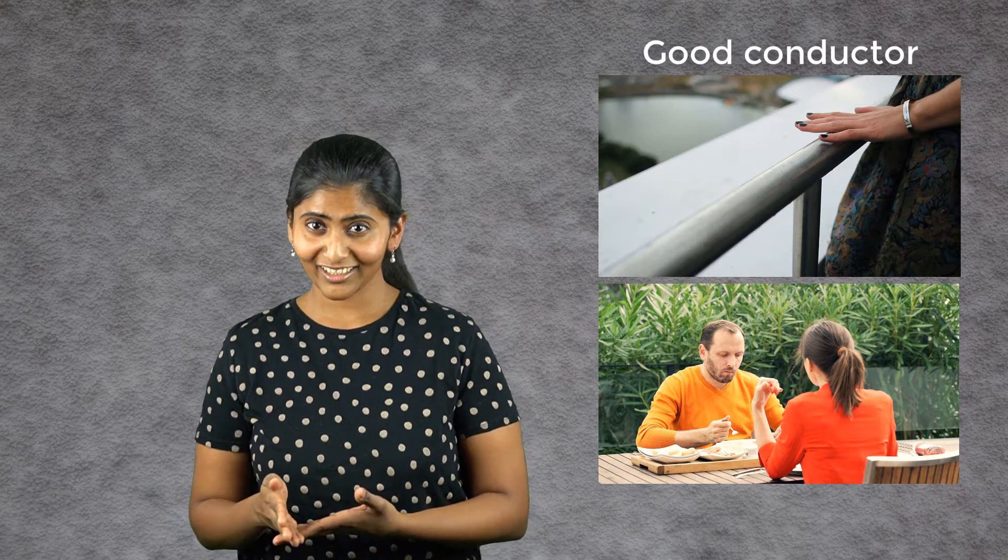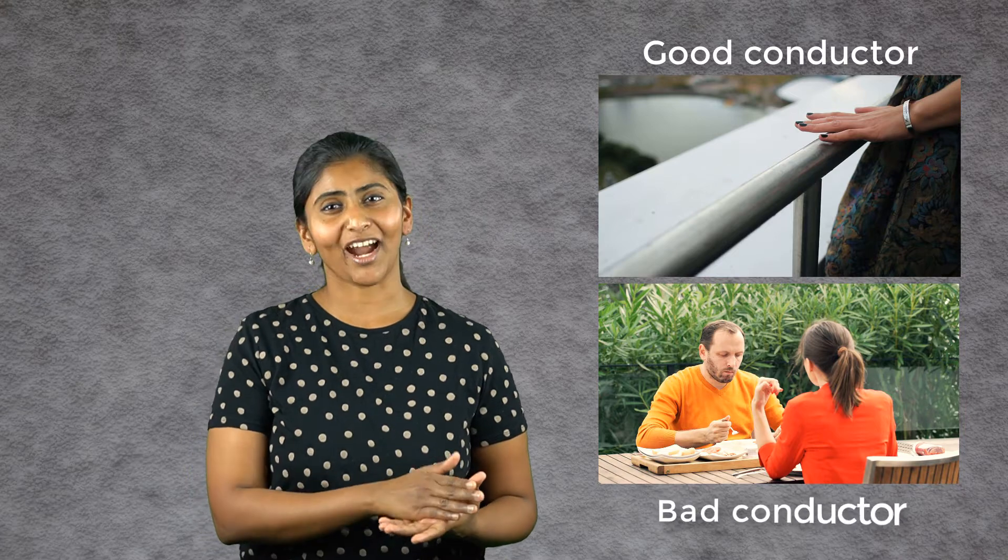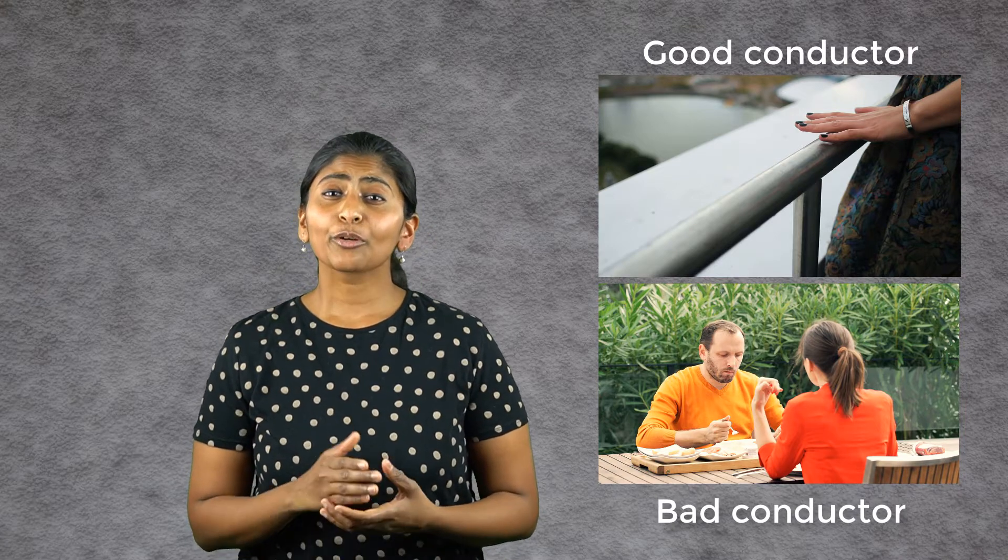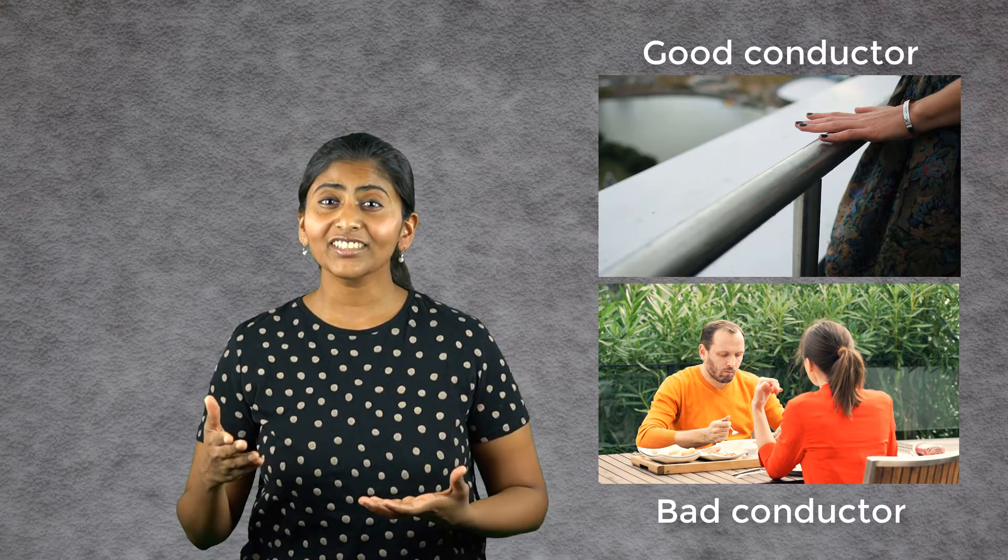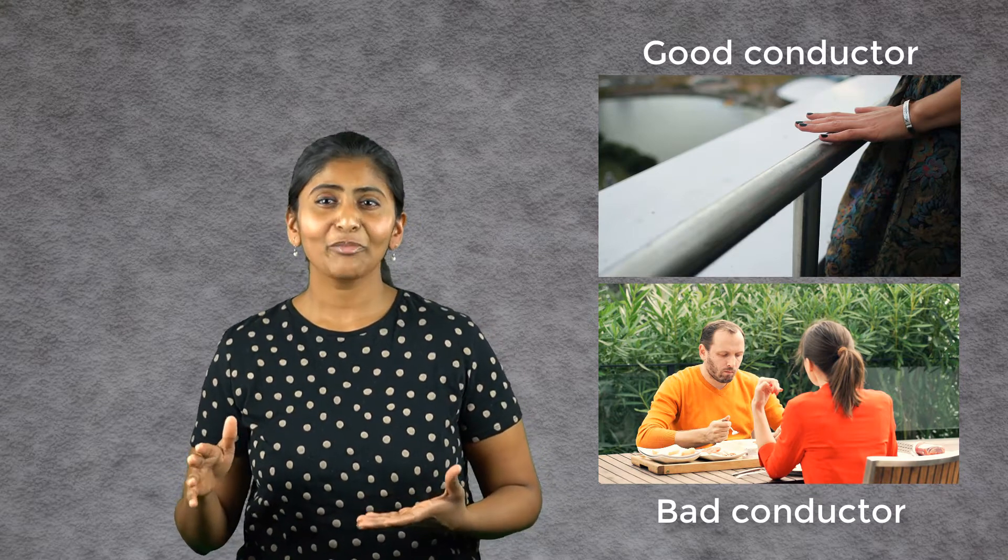Different materials conduct heat at different rates. For example, on a cold day, if you touch a metal handrail, your hand feels cold suddenly. But if you touch a wooden table, you do not feel very cold. This happens because metal is a good conductor of heat, while wood is a bad conductor. So heat flows out of your body at a faster rate when you touch a metal handrail, making you feel cold.